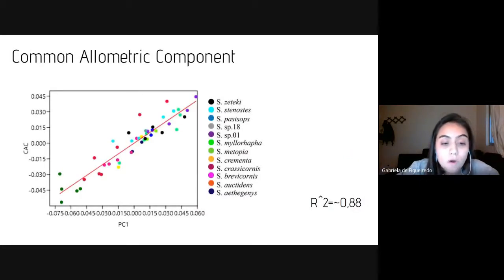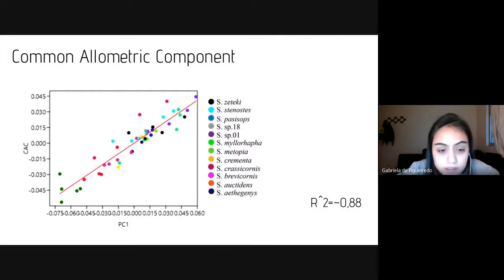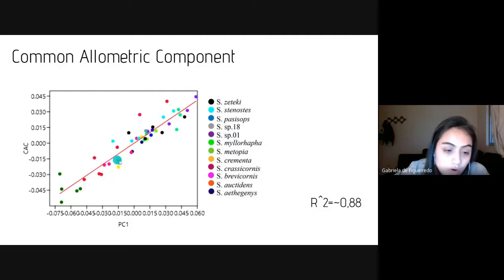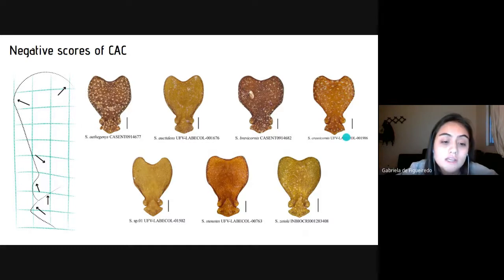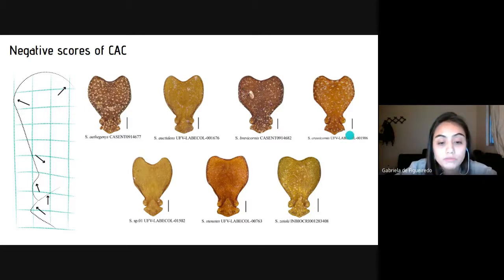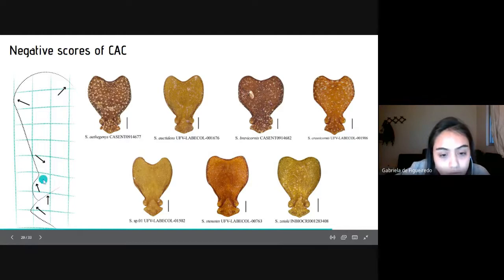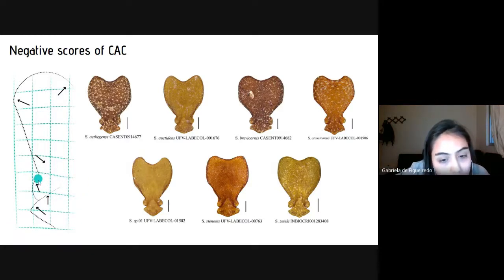An allometric effect could be identified in the preliminary ordination analysis and accounts for most of the variance. Therefore, we explored shape variation through Common Allometric Analysis. The allometric component revealed a clear structure in the morphospace. In this chart, we see a subdivision explaining the variation between positive and negative scores. The negative scores group the species metopias, octidens, brevicornis, klassikornys, sp1, zetex, and stenotis. The morphology of these species is characterized by an expansion of the vertex region, contraction of the frontal carina, lateral expansion of the frontal lobe, and expansion of the posterior apex of the clypeus.